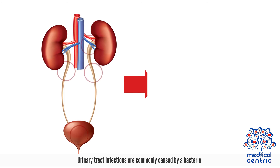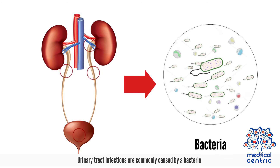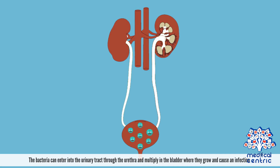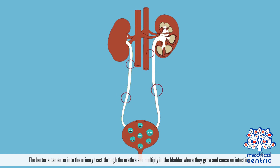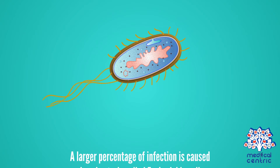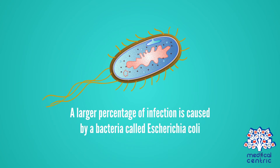Urinary tract infections are commonly caused by bacteria. The bacteria can enter into the urinary tract through the urethra and multiply in the bladder, where they grow and cause an infection. A larger percentage of infections are caused by a bacteria called Escherichia coli.